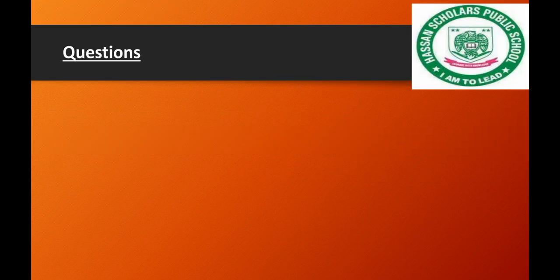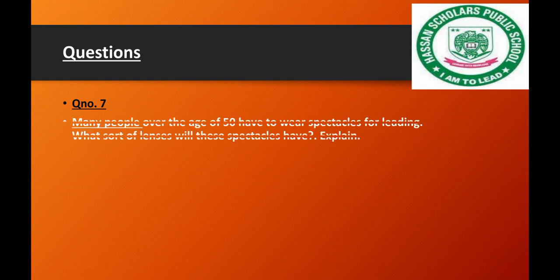We will see Question number 7: Many people over the age of 50 have to wear spectacles for reading. What sort of lenses will these spectacles have? Explain. We have to discuss what lenses or glasses are used.